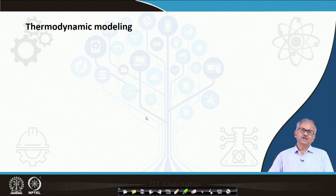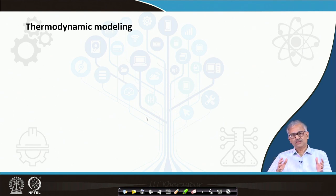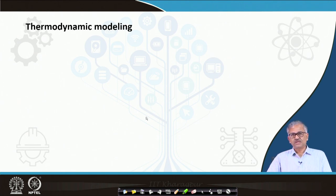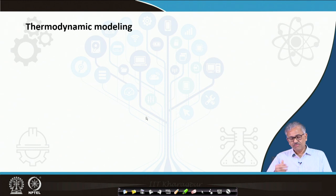Sometimes it has been found that if you do a multi-zone thermodynamic model — dividing the whole reactor into a number of reactors connected by input-output flow — it moves closer to the real situation. Otherwise, the thermodynamic model does not capture transient phenomena, and whether phases attain thermal equilibrium or not during the actual process may not be the case. It can only calculate the final composition if equilibrium is attained.